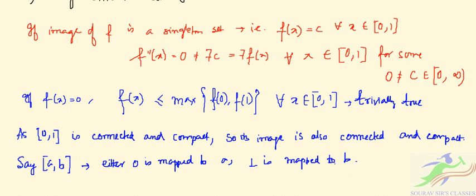Either 0 is mapped to a and 1 is mapped to b, or 0 is mapped to b and 1 is mapped to a.